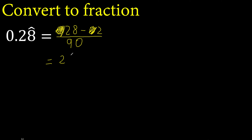Here, 26 over 90 can be simplified because it can be divided by the same number. Divided by 2: divided by 2 is 13, 45. Ok.